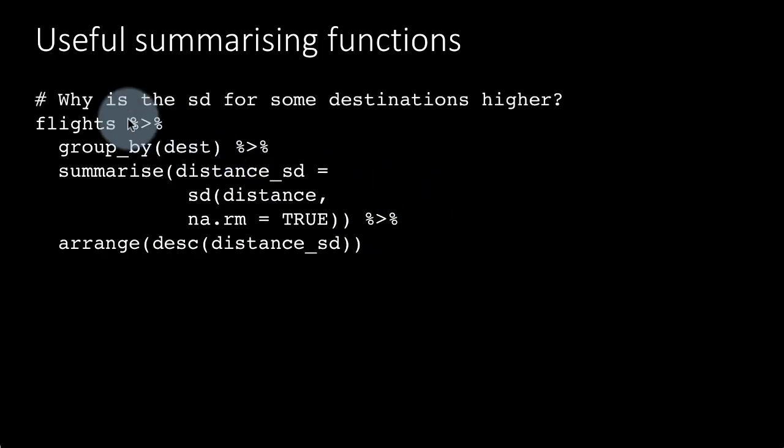So why is the standard deviation for some destinations higher than for others? After all, like we discussed earlier, you are flying from New York to Atlanta. So why should there be even any variation in the distance? Of course that is happening because, as I said earlier, your flight may not always fly in exactly the same path.